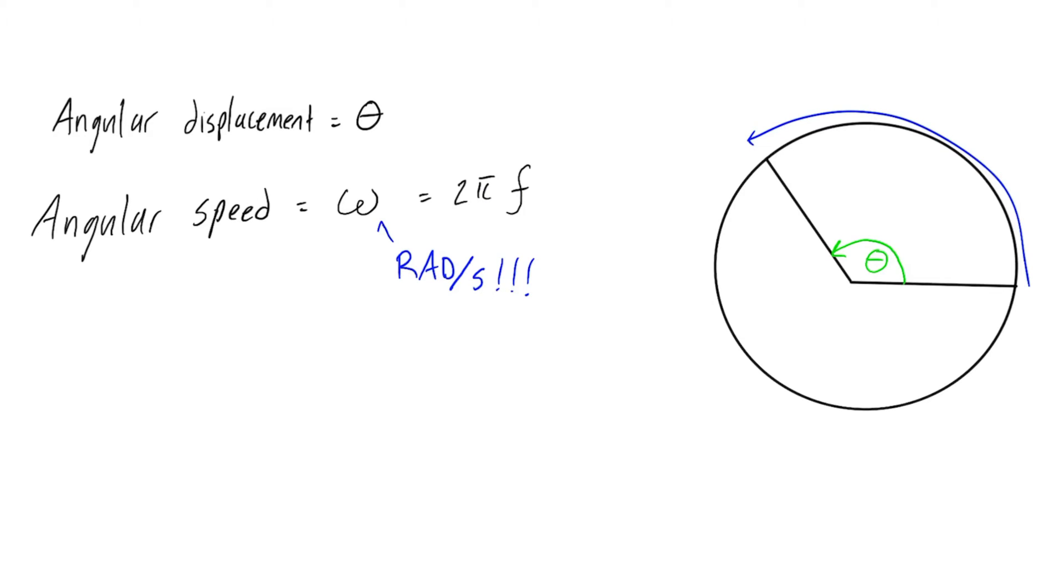Frequency, if you don't remember, is expressed in hertz, and one hertz is equal to one cycle per second. So really, when you look at this expression, you see this 2π in here. All that's doing is converting from cycles per second into radians per second.